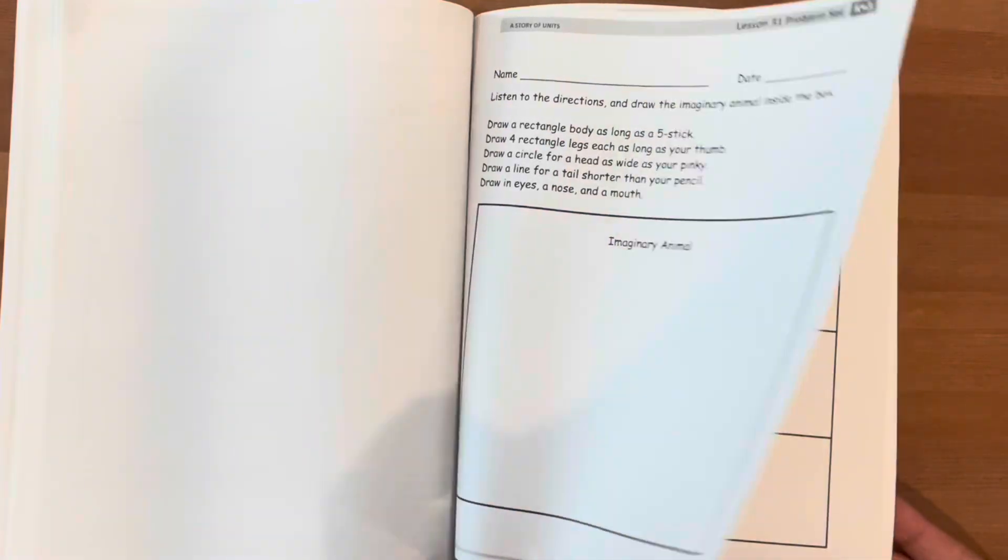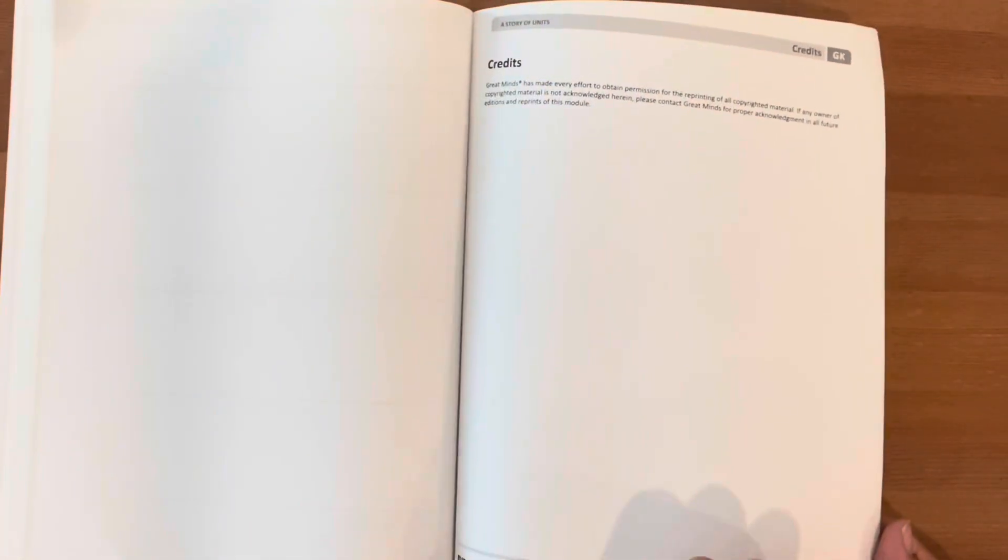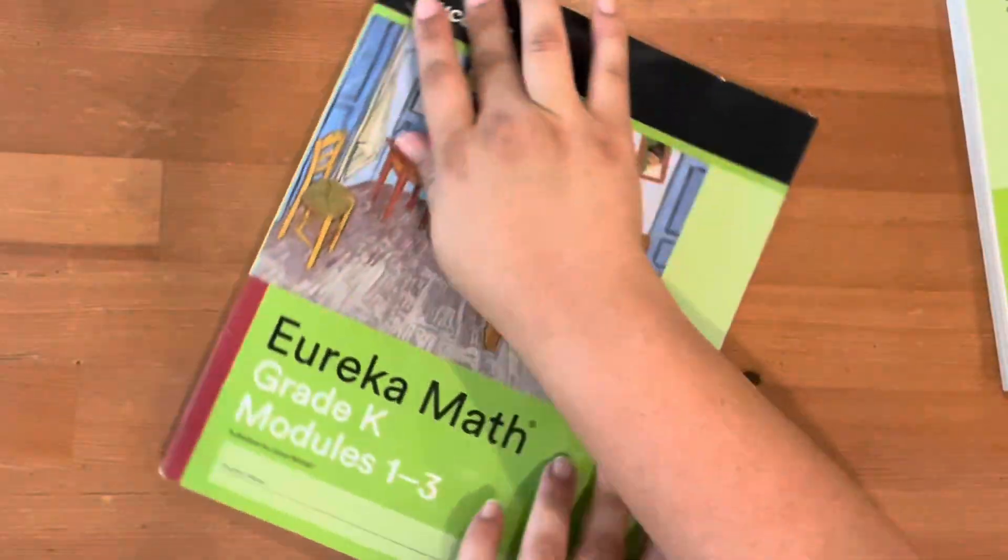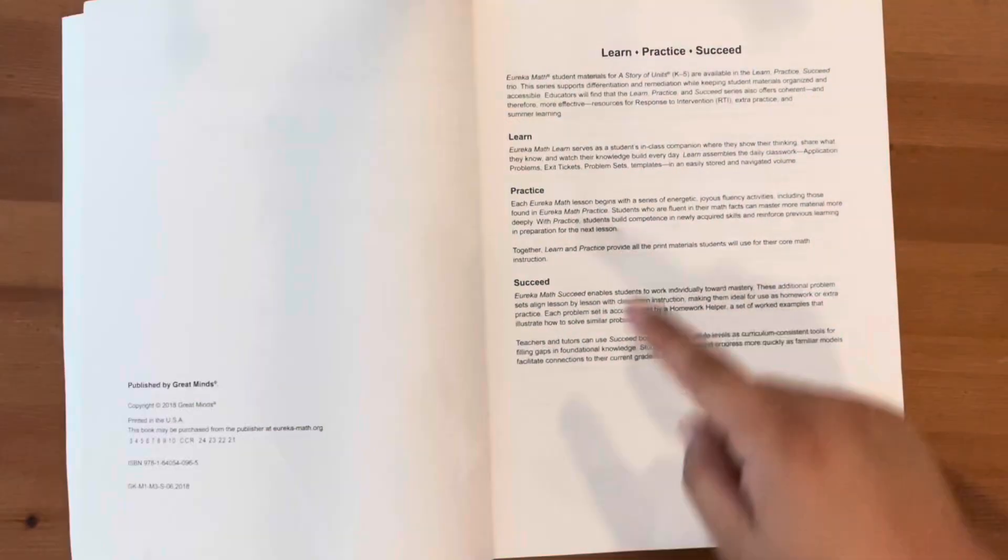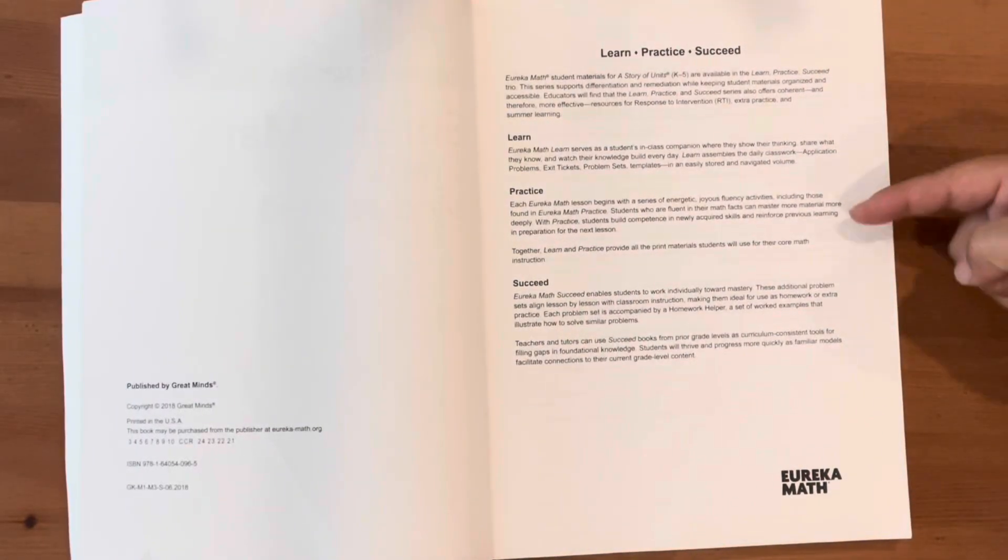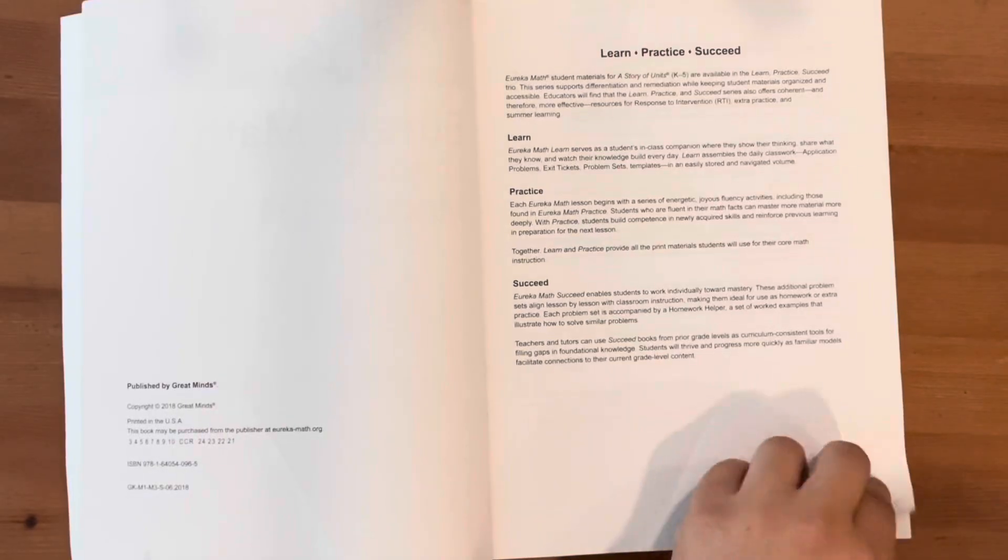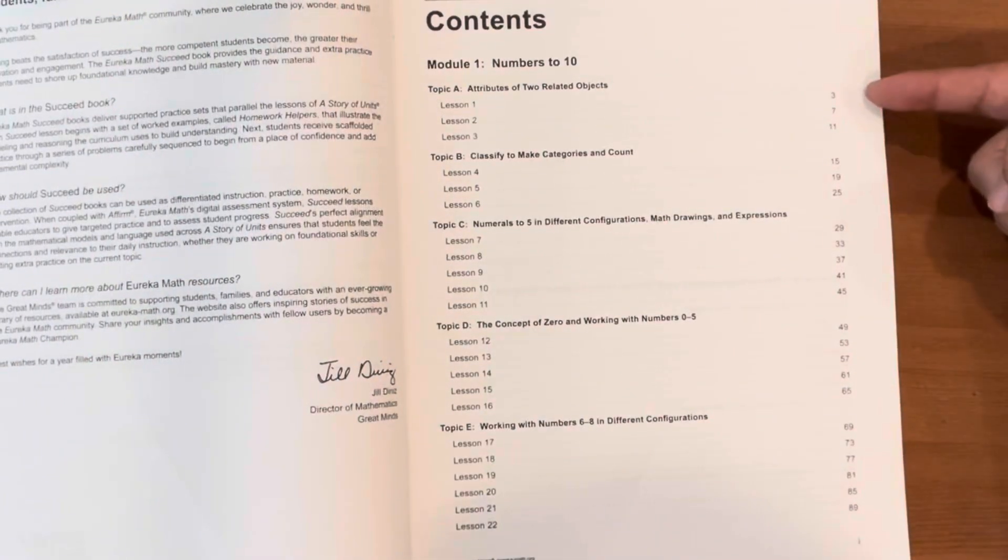Now we're getting into our next workbook, which is Eureka Math for Kindergarten, Grade K, Modules 1 through 3. If you look on the upper left-hand side, it's a Succeed workbook.